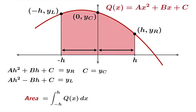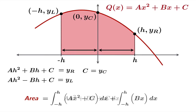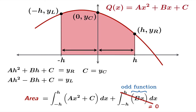So the area is the integral of q from negative h to h. We put in our formula ax squared plus bx plus c, and we break this up into two integrals: the integral of ax squared plus c on the interval, plus the integral of bx on the interval. We notice that the linear function bx is an odd function — it's a line through the origin — so when we integrate it from negative h to h, we get 0. We don't have to worry about that piece at all.